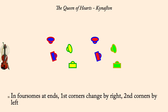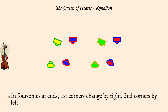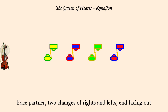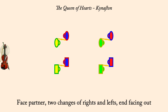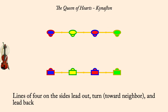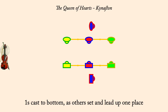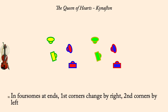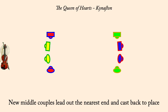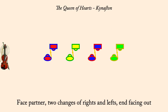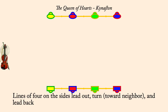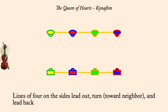First corners change by right, second by left. New middles lead out nearest end and cast back. Two changes of rights and lefts, end facing out. Lines of four lead out, turn, lead back. Ones cast to bottom as others set and lead up. First corners change by right, second by left. New middles lead out nearest end and cast back. Two changes of rights and lefts, end facing out. Lines of four lead out, turn, lead back. New middles lead out nearest end and cast back.